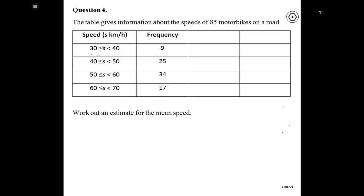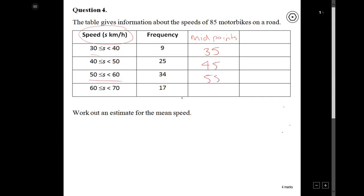Okay, so whenever we have grouped data, then what we need is a midpoint. And that's why these columns are here. So in this column over here, we can say these are going to be my midpoints. So let's just write midpoints over here. And the midpoints go from the speed. So between 30 and 40 is 35. Between 40 and 50 is 45. Between 50 and 60 is 55. And lastly, between 60 and 70 is 65.